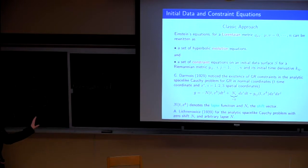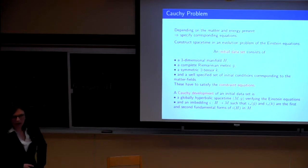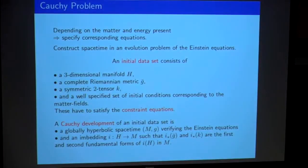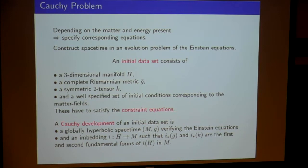What is initial data for the Einstein equation? We have a three-dimensional manifold H, which I think of as a space-like slice of my space-time, with a complete metric G-bar and a symmetric two-tensor — this is going to be the second fundamental form with respect to a time vector field — plus initial conditions corresponding to matter fields. They have to fulfill the constraint equations, which are called the constraints. The Cauchy development is then a globally hyperbolic space-time embedding from my space-like hypersurface into the full manifold, where the initial data embeds as the first and second fundamental forms.